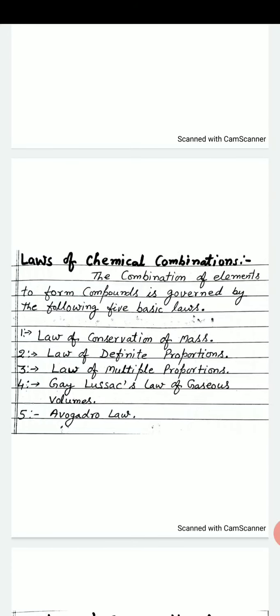Laws of chemical combinations. The combination of elements to form compounds is governed by the following five basic laws. First, law of conservation of mass. Second, law of definite proportion. Third, law of multiple proportion. Fourth, Gay-Lussac's law of gaseous volume. Fifth, Avogadro's law.